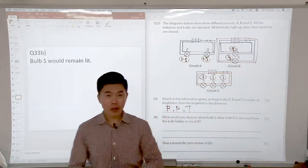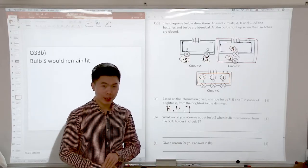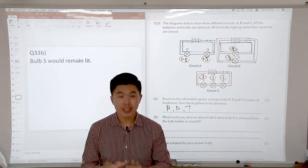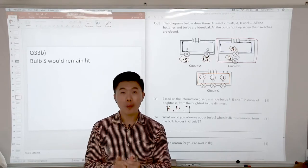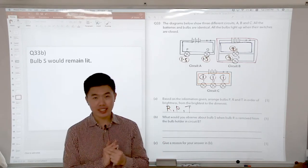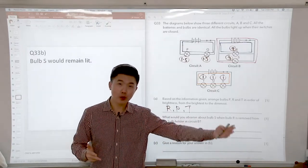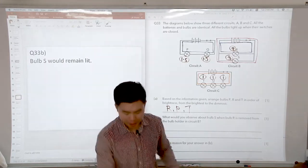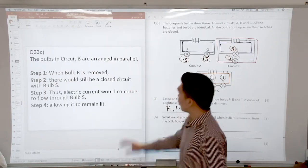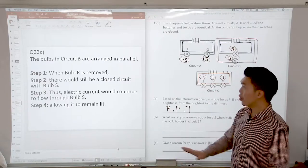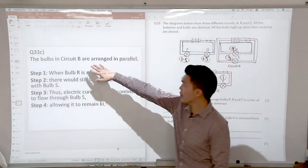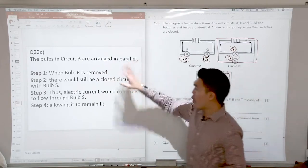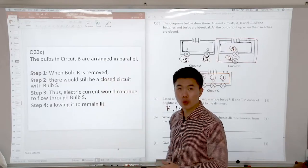What's the reason for that? I'm going to introduce to you the four steps. What are the four steps? The first one is, what is the situation? The second one is, is it now an open or closed circuit? The third step is, does electric current pass through or flow through? The last step is, what is the outcome? Let me show you the answer and then I'll discuss it from there. So if we're going to look at C, give a reason for your answer. We say that the bulbs in circuit B are arranged in parallel. That was what I mentioned just now. Step one is the situation. When bulb R is removed, this is given to us in the question.